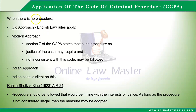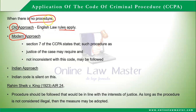If there is no procedure set out for a certain offense, the old approach was that English law rules would apply. But the modern approach, as stated in Section 7 of the Code, is that such procedure as justice of the case may require and not inconsistent with this Code may be followed.